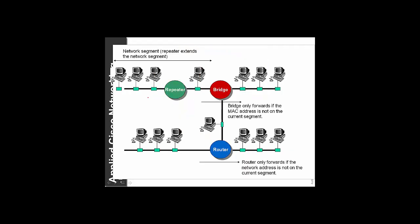Repeaters also extend a network segment, basically cleaning up the signals, multiplying the signal strength and resynchronizing. The bridge in this case will forward ARP broadcasts along here too, but it will be stopped by this port. Also, the router only forwards for a network segment which is on that segment.